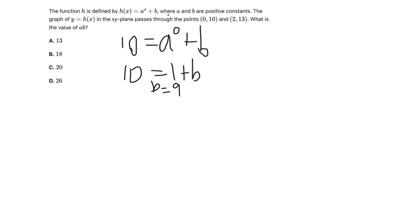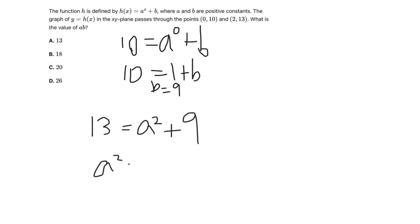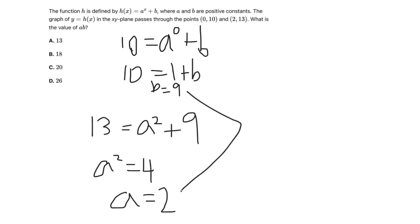Now that b equals 9, we plug in the second point (2, 13): 13 equals a to the power of 2 plus 9. Subtracting 9 from both sides, a squared equals 4. Since a must be a positive constant, a equals 2. So a equals 2 and b equals 9. Multiplying them together: a times b equals 18. The answer is B.